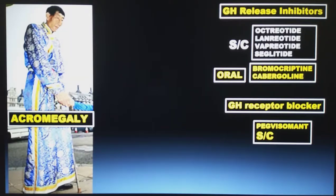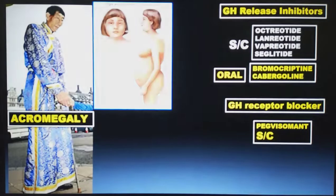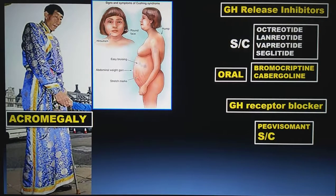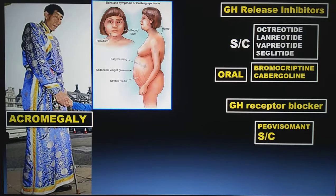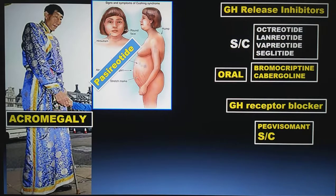I want to discuss some extra points. Looking at this image of the face — it shows moon-like face, buffalo hump, and central obesity with stretch marks. This is a classical presentation of Cushing syndrome. There are many drugs for Cushing syndrome, but importantly, a newer somatostatin analogue called pasireotide is approved specifically for treating Cushing syndrome.